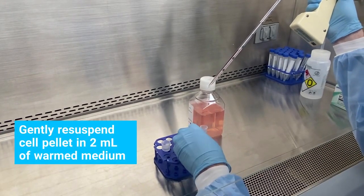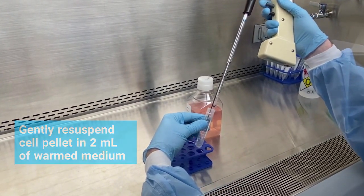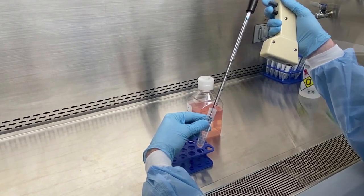Gently re-suspend cell pellet in 2 milliliters of warmed medium. Mix the cell solution carefully to make sure there are no clumps. You may now count the cells and determine viability.